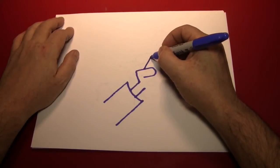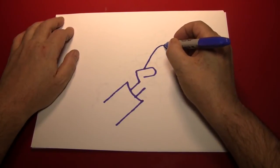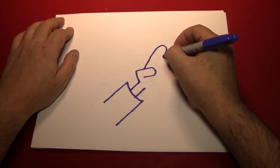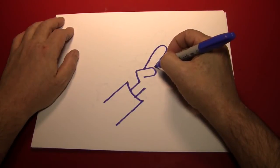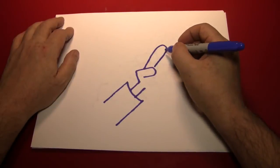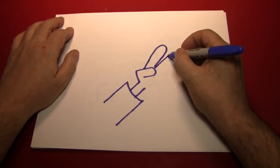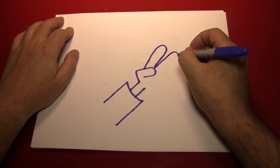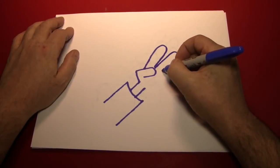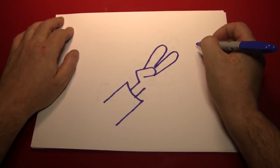So we'll start by drawing the index finger, which lines up with where the thumb bends, right there. Then make the middle finger, which is just a little bit longer than the index finger, like that.